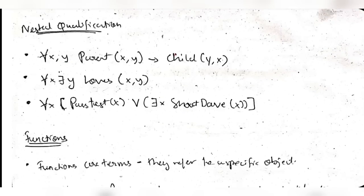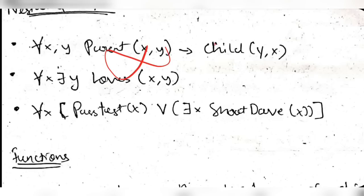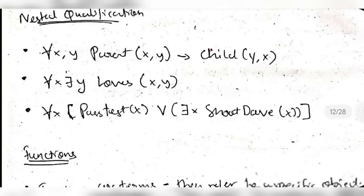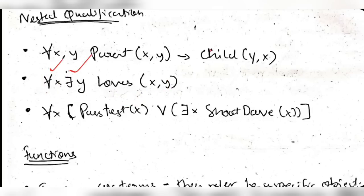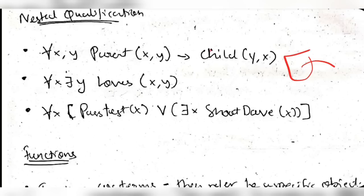In nested quantification, two or more quantifiers are used together. For example: ∀x,y parent(x,y) → child(y,x) - if x is the parent of y then y is the child of x. A mixed example: ∀x ∃y loves(x,y) - for all x there exists one y such that x loves y. This means every person loves someone.